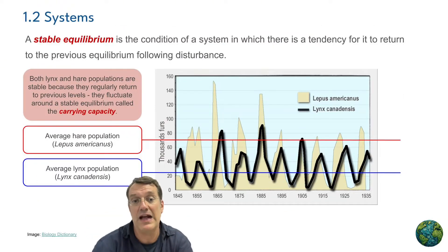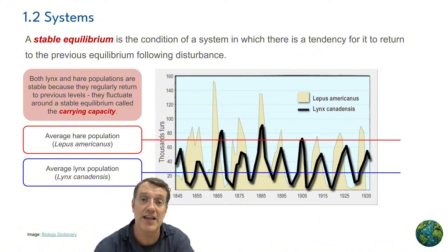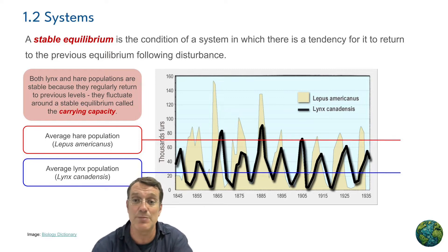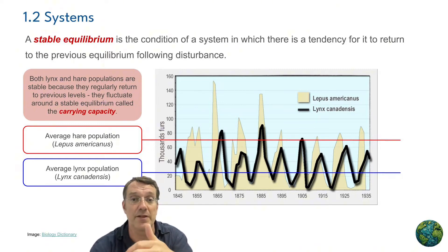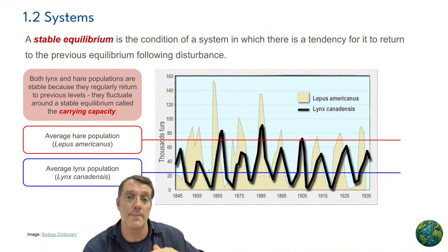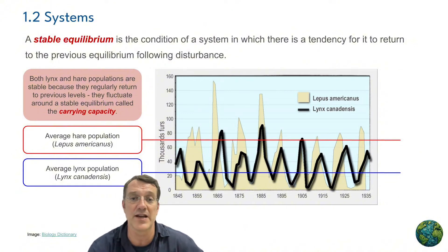Negative feedback loops play a crucial role in maintaining a stable state equilibrium. Back to the predator-prey relationships — the population fluctuations tend to return to a stable average over time. This average is called the carrying capacity. The lynx and snowshoe hare population may change seasonally over a few years, but over time it returns back to that same steady state equilibrium or carrying capacity.